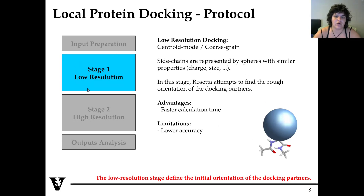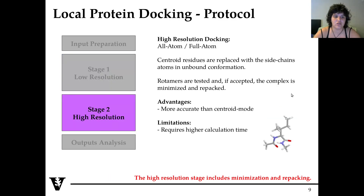This is why we then pass to the high resolution step, also called all-atom or full-atom. In this case, the centroids are replaced with side chains from the unbound conformation, and then we test different conformations for the side chains called rotamers. If accepted, the complex is minimized and repacked. So this is much more accurate than the centroid mode, but it takes much more calculation time. You need to find a good balance between the two.